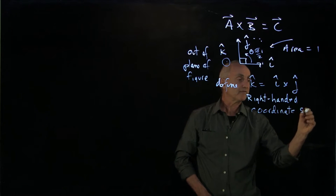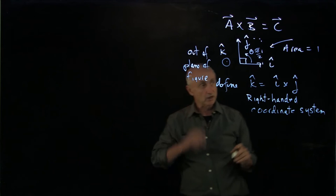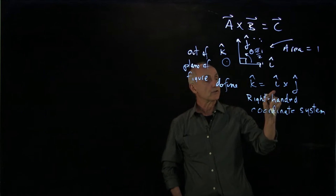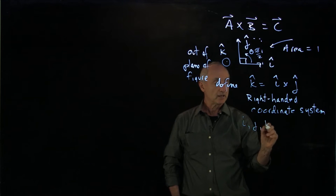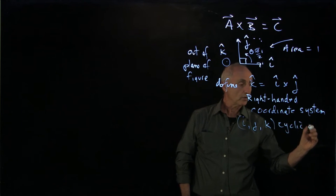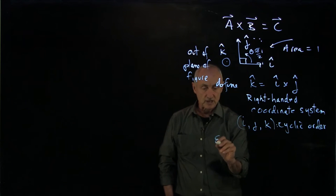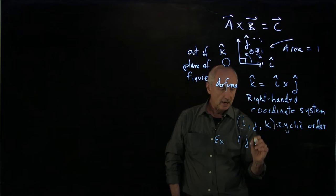Now, there's something very nice about this cross product in the cyclic definition. Notice that there's a cyclic order. i, j, k is a cyclic order. And if you interchange any two, for example, j, i, k, that's anti-cyclic.